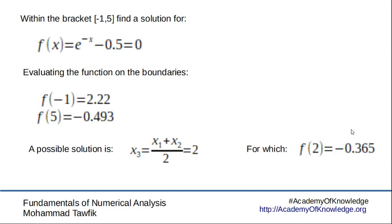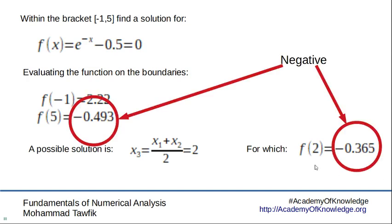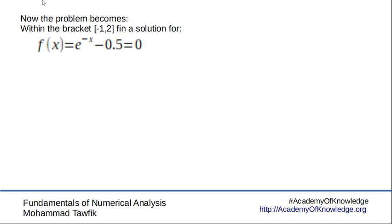It has a minus sign like that of f(x₂), so now what we do is put x₃ in the place of x₂. Now the problem becomes finding the root of the function in the interval [-1, 2], as the value of 2 replaced the value of 5.